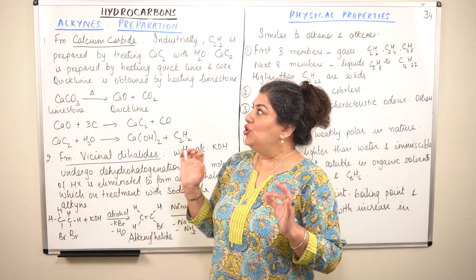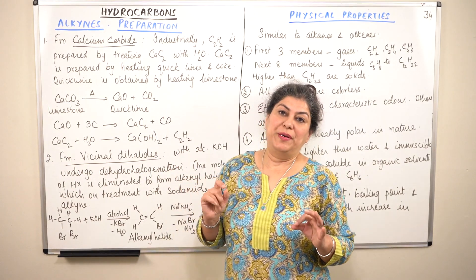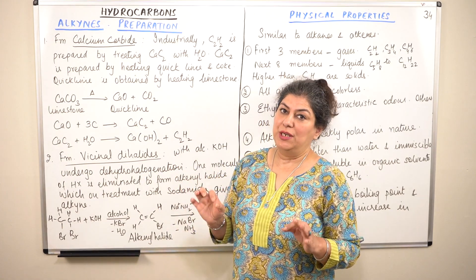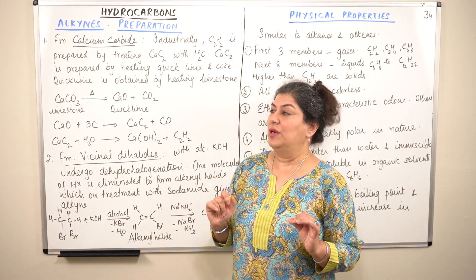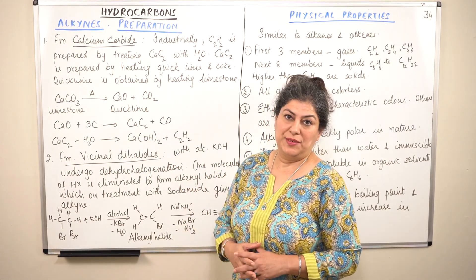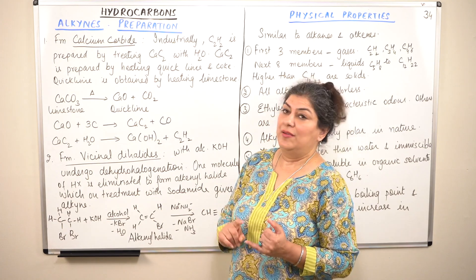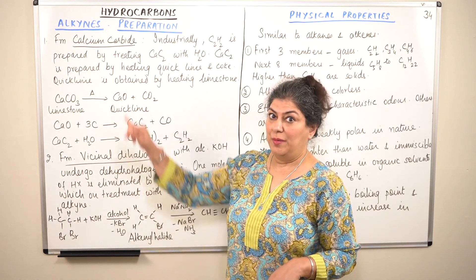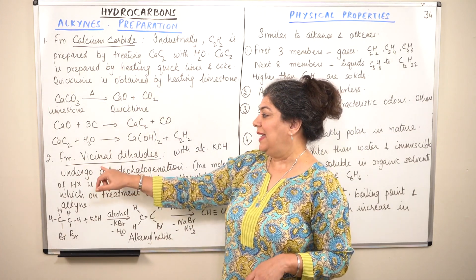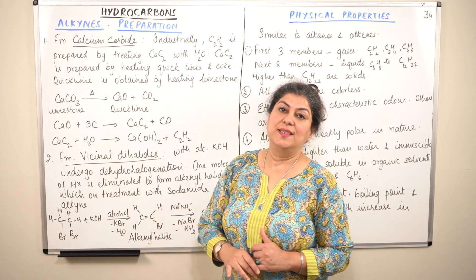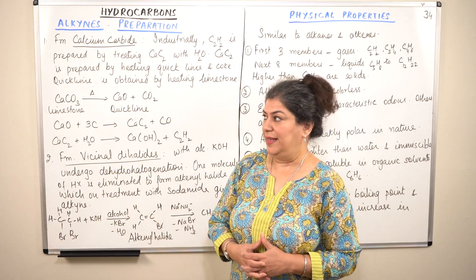There are two methods of preparation mentioned in your book for alkynes. The first is from calcium carbide and the second is from vicinal dihalides.